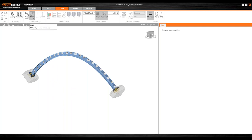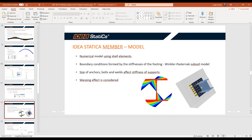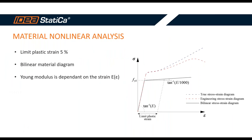In the ribbon, we have three types of analysis: Material Nonlinear Analysis (MNA), Linear Buckling Analysis, and Geometrically and Materially Nonlinear Analysis with Imperfections (GMNIA). I run the first step — MNA. The assumptions are: plastic strain limit of 5%, bilinear material diagram with small hardening, elastic modulus divided by 1000 for numerical stability, and the Newton-Raphson method for solving.